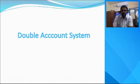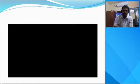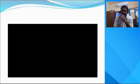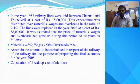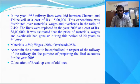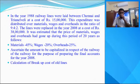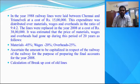Next slide. Introduction to the double account system — a small video to present here. In the double account system, the railway lines are laid at a cost of rupees 15 lakhs.